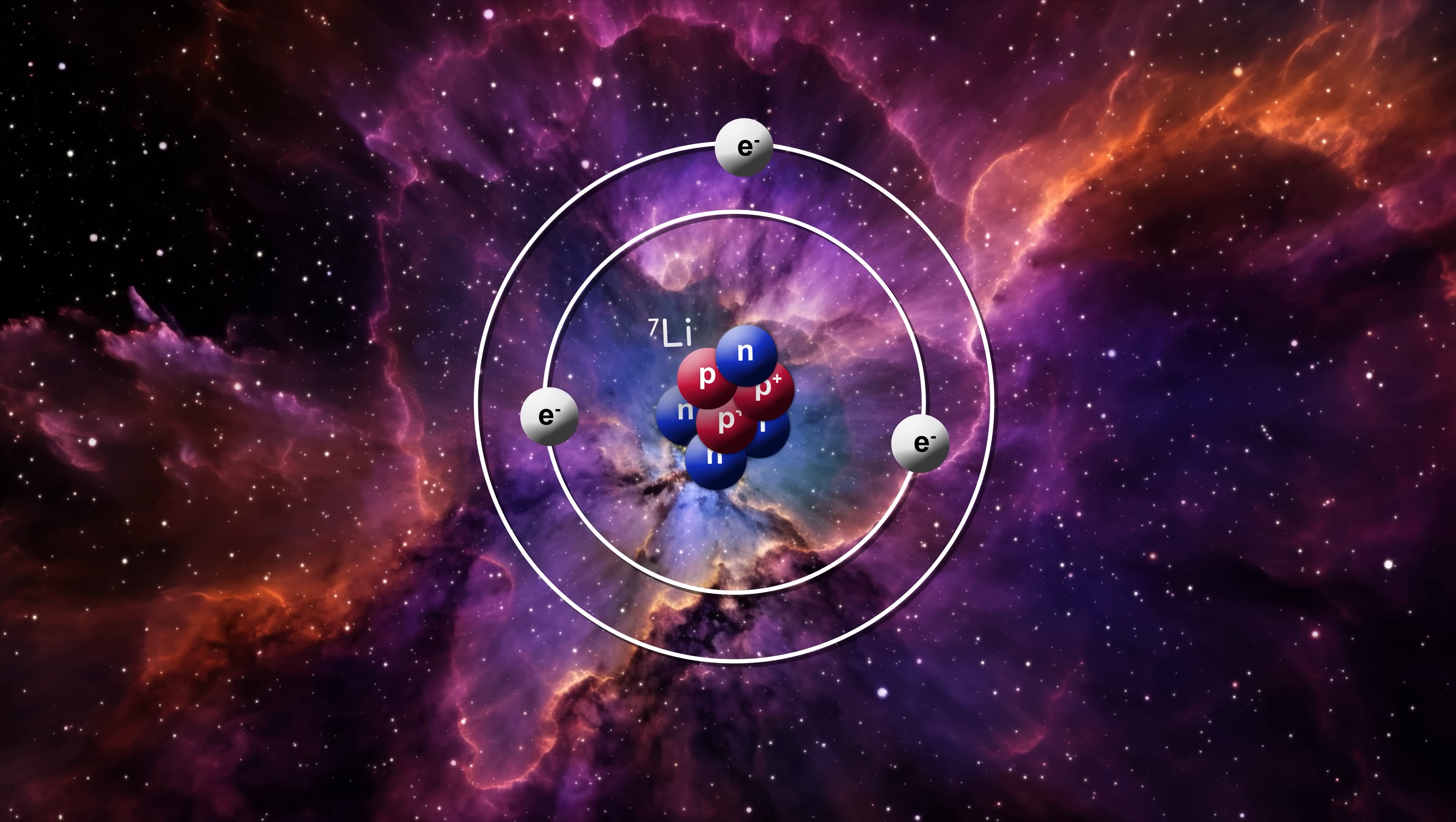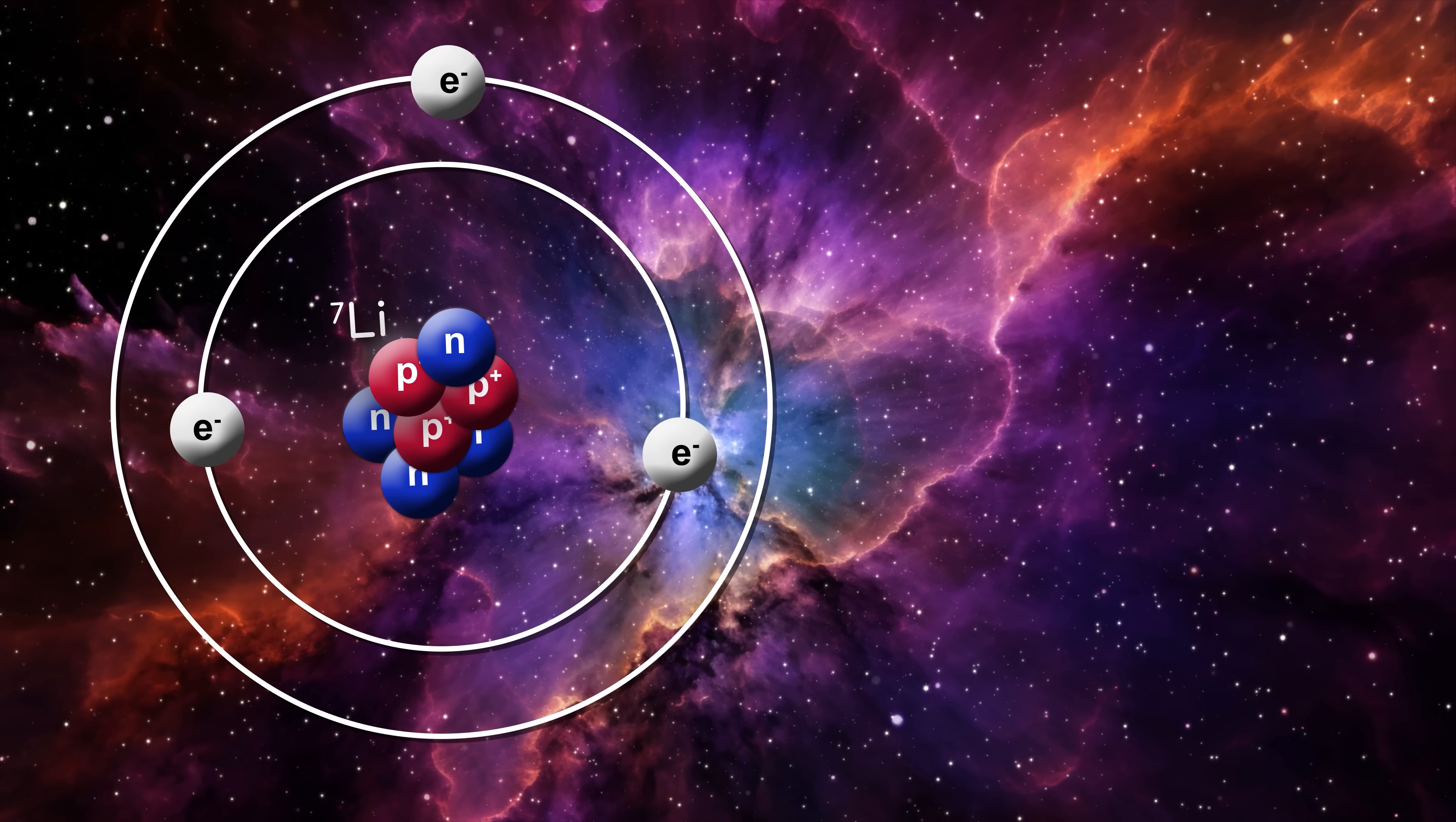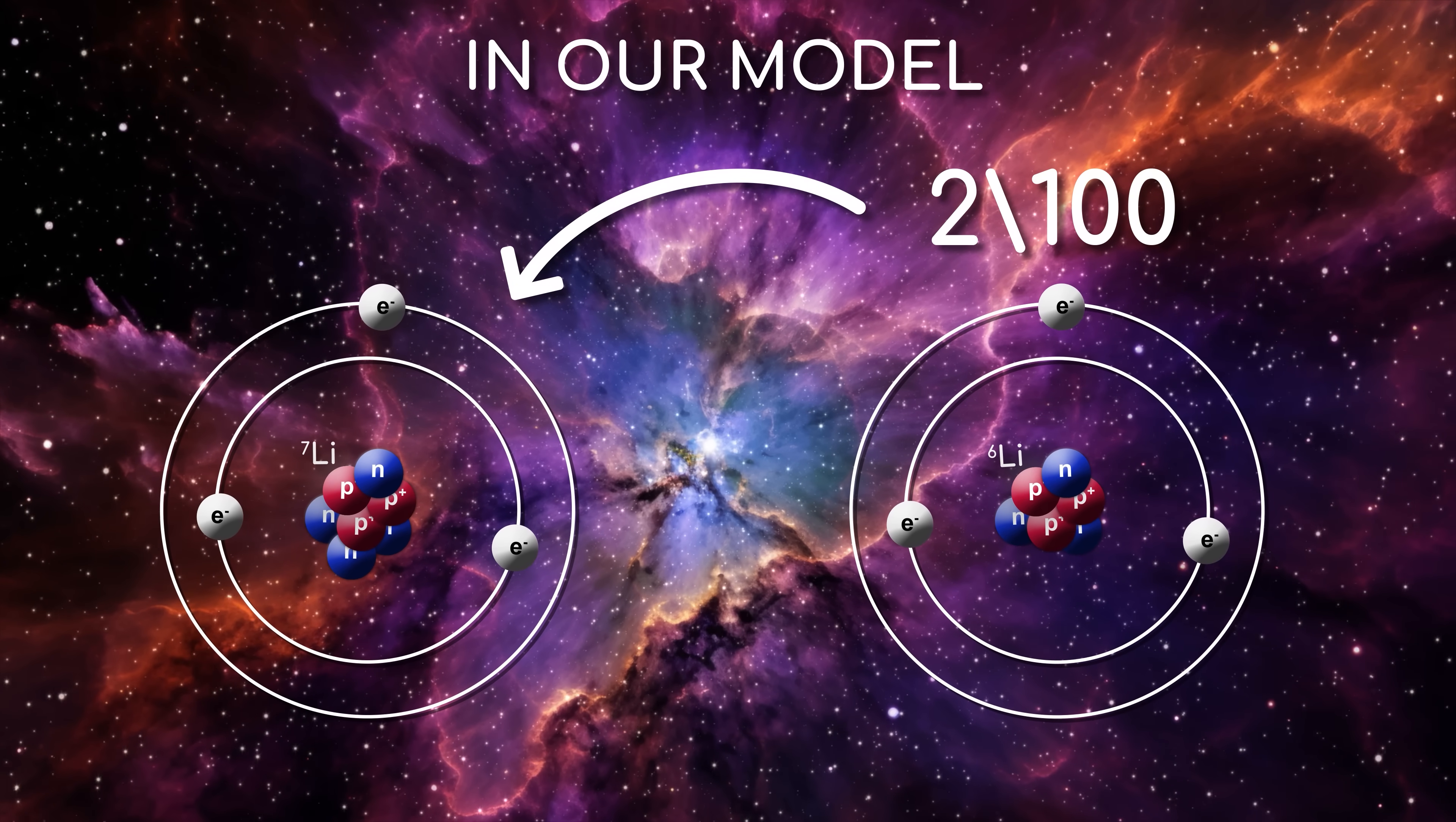Lithium-7 is the isotope that we tend to see in the early universe. This means that a lithium atom has 3 protons and 4 neutrons in its nucleus. But there is another isotope of lithium, known as lithium-6, with one fewer neutron, that is meant to be much less stable and much less common than its counterpart, supposedly making up only 2 out of every 100,000 lithium nuclei.